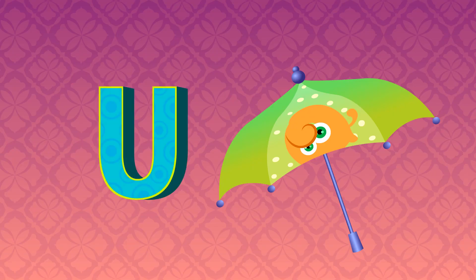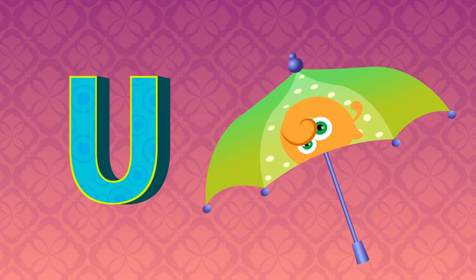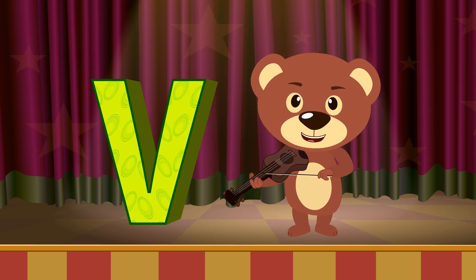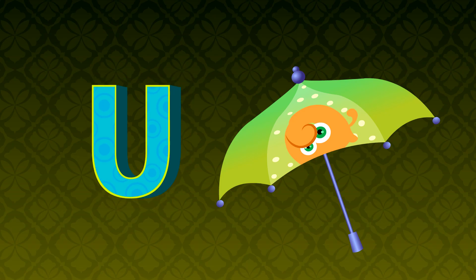U is for Umbrella. U, Umbrella. V is for Violet. V, V, Violet.